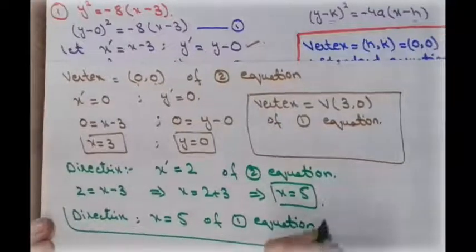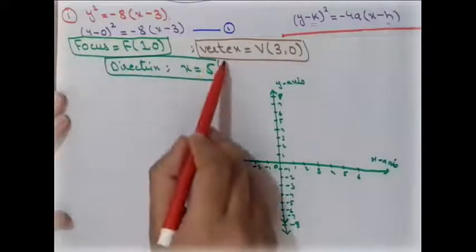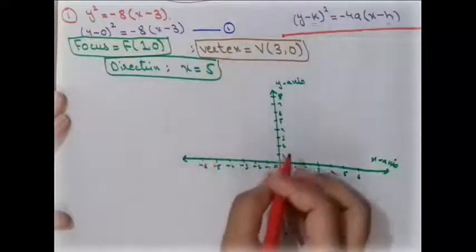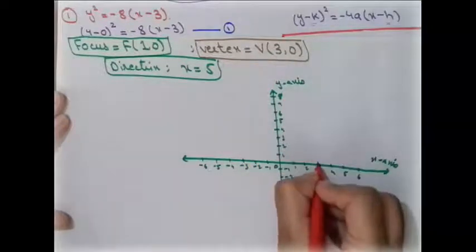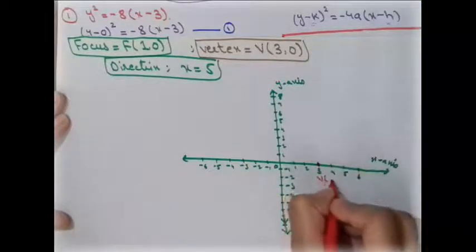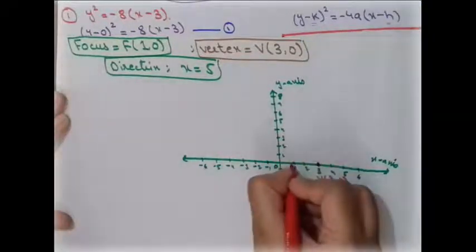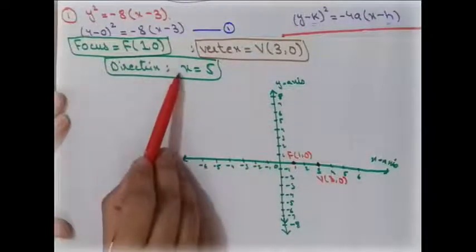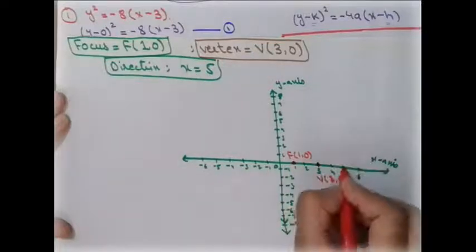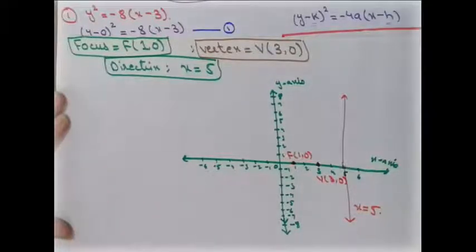So for the main equation: the vertex is (3, 0), the focus is (1, 0), and the directrix is the line x = 5. We now plot these — the vertex at (3, 0), the focus point at (1, 0), and the directrix line x = 5.